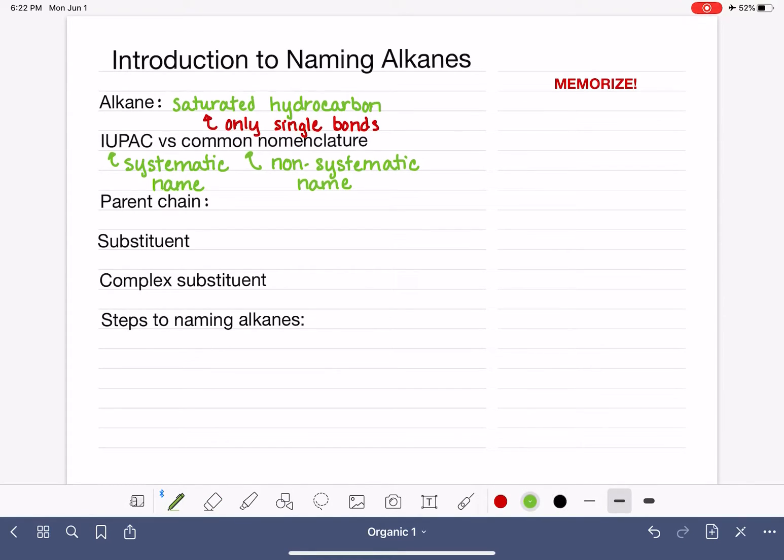the very first thing that we always need to do is identify the parent chain for the molecule. And the parent chain is the longest continuous chain of carbon atoms. So we call this the parent chain, and this longest continuous chain of carbon atoms is what dictates the molecule's base name. So let's go take a look at that, the parent chain and the base names.